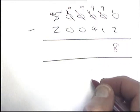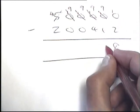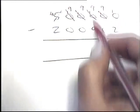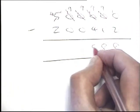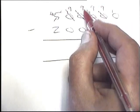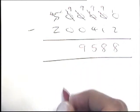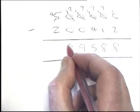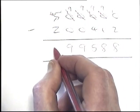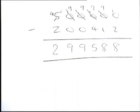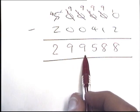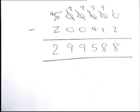After completing the borrowing chain: 10−2=8; 9−1=8; 9−4=5; 9−0=9; 9−0=9; 4−2=2. The answer is 299,588 — two hundred and ninety-nine thousand, five hundred and eighty-eight. This video will now be continued in part four.